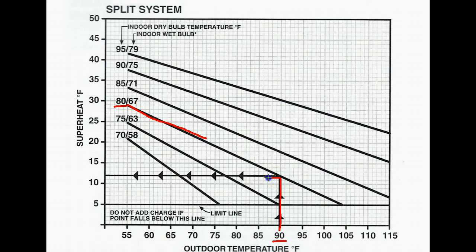You will follow the outdoor temperature up until it intersects with the indoor temperature line on your chart, and then you're going to follow it directly over to the vertical superheat range. You'll find that with a 90 degree outdoor air temperature and an 80 degree indoor air temperature, the superheat of the system, if it is properly charged, should be 12 degrees.